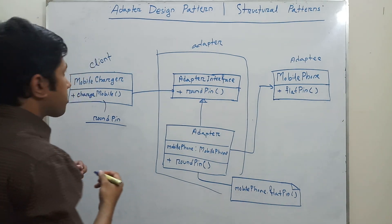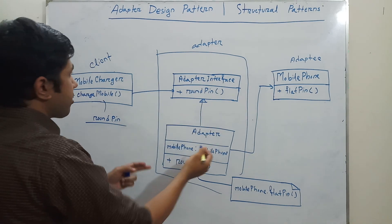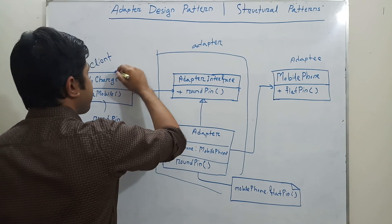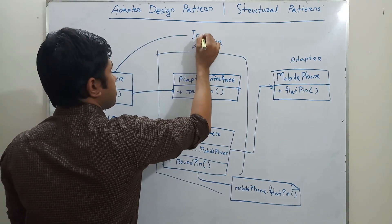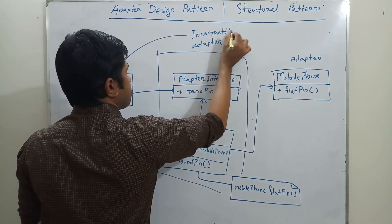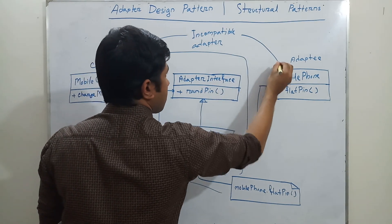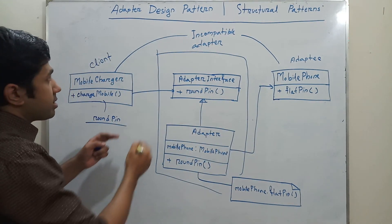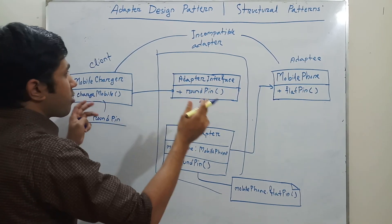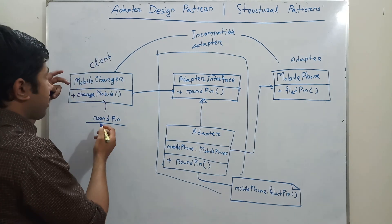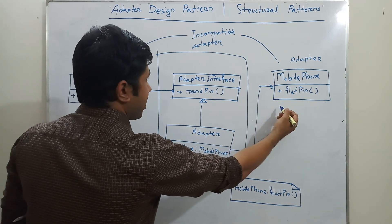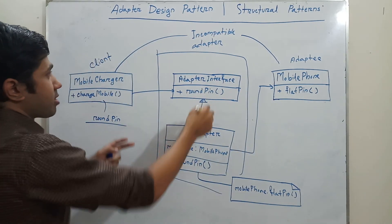So the functionality of the adapter is allowing two incompatible interfaces to work together. Here this is the incompatible interface. The adapter allows two incompatible interfaces to work together, where the client will access the adapter interface and the adapter will access the adaptee function. And that's how the adapter works.